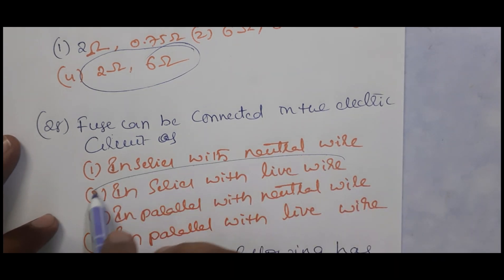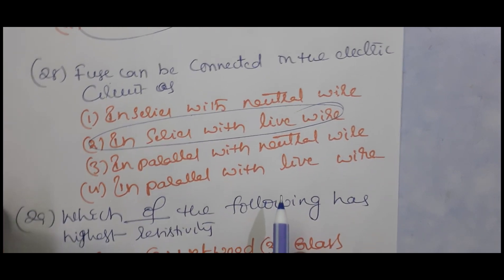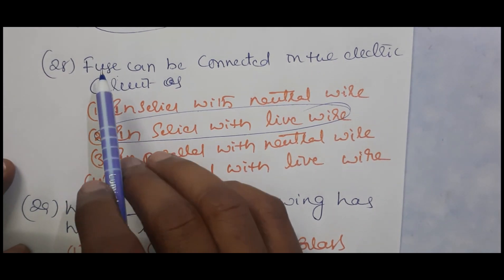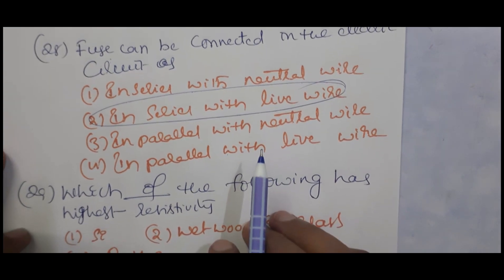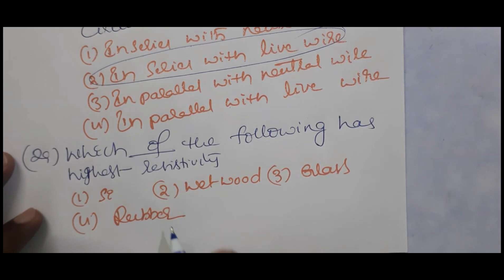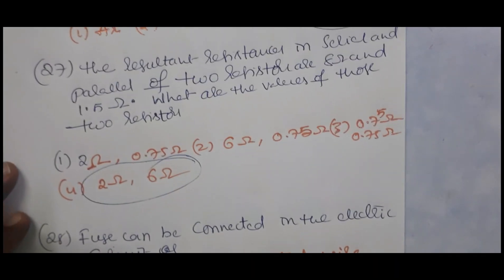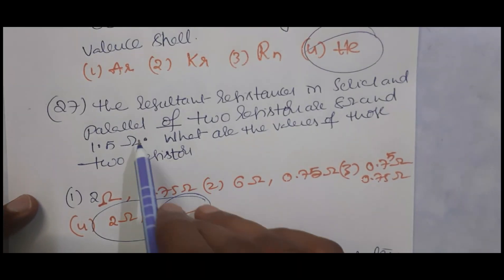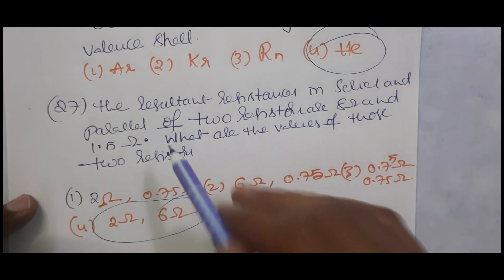A fuse is connected in an electric circuit in series with the live wire. The fuse is used to prevent damage caused by overload. It should have a lower melting point and be very thin, and it is always connected in series with the live wire. Which of the following has the highest resistivity? Rubber has the highest resistivity among the given materials. The solution is also uploaded in the shorts.